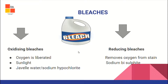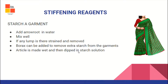Oxidizing bleaches work better and faster compared to reducing bleaches. Stiffening agents include starch. We add arrowroot in water, mix well, strain it to remove any lumps, and then use it. Borax can be added to remove excess starch which sticks to the garment. The article should be made wet before being dipped in the starch solution.